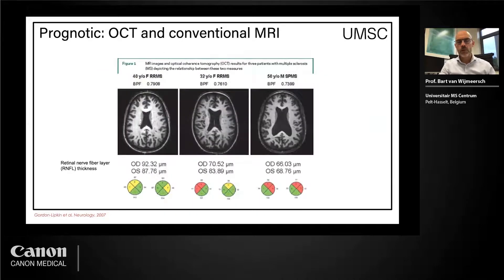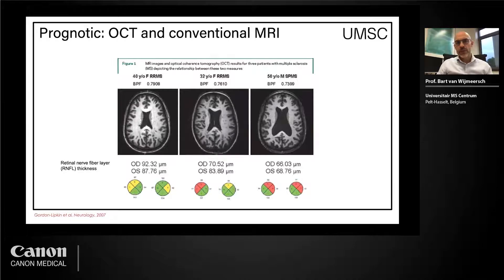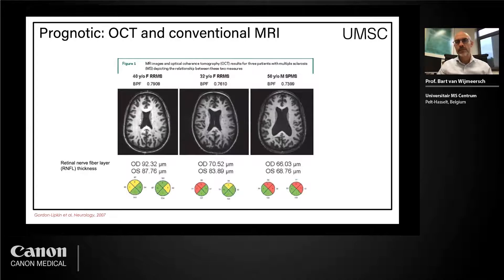Apart from diagnosing, I don't think that's the biggest achievement of OCT. I think the most important next step is its prognostic value and follow-up of patients with OCT, which can have a very big impact in clinical practice. There is a good correlation between what happens on the retina and what happens inside the brain in MS.